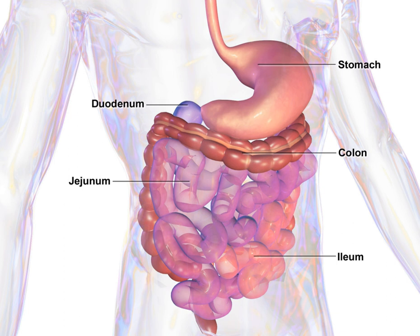Other conditions affecting the large intestine include angiodysplasia of the colon, constipation, diarrhea, Hirschsprung's disease and aganglionosis, intussusception, polyps, pseudomembranous colitis, and toxic megacolon, which is usually a complication of ulcerative colitis.